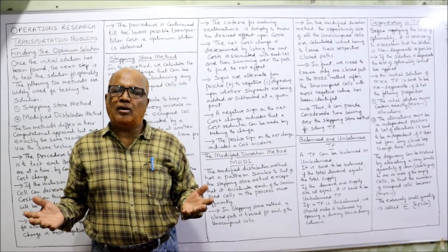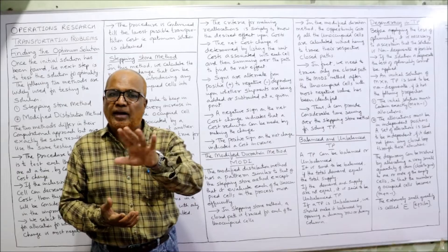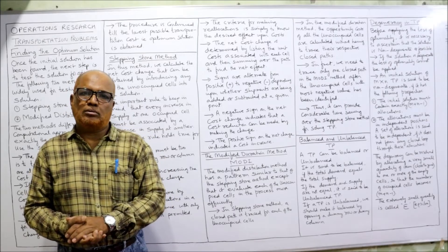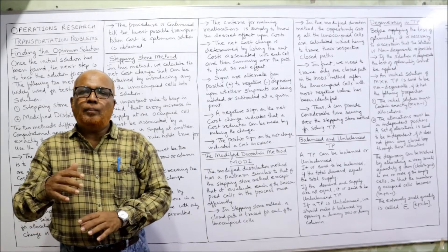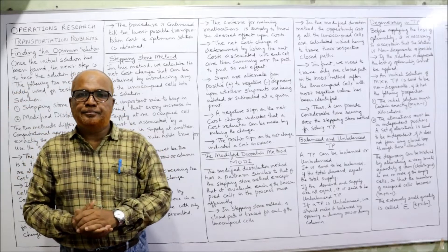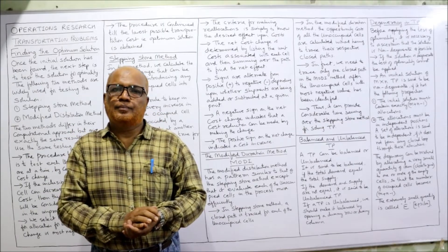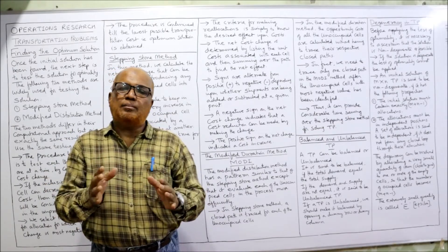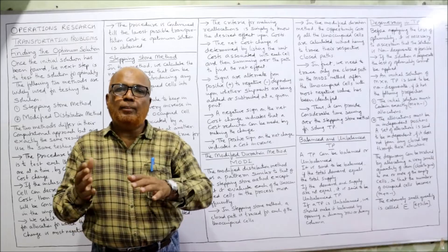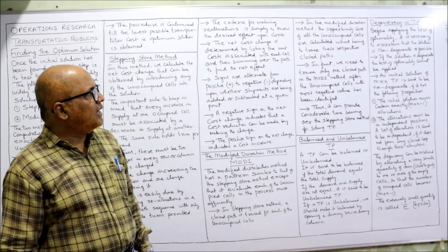Whenever supply and demand are not equal, the problem is unbalanced. In that case we have to make it balanced before proceeding to find the solution. How to balance it: we open a dummy row or dummy column. If supply is less and demand is more, we open a dummy row to make supply equal to demand. Similarly, if supply is more but demand is less, we open a dummy column. A dummy row or column is opened to make the problem balanced.